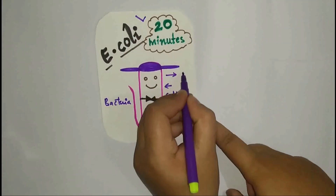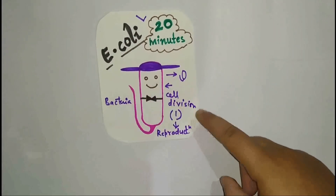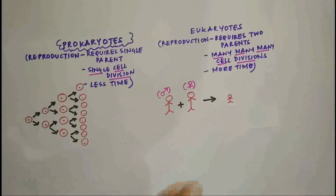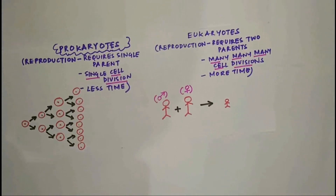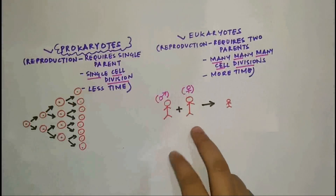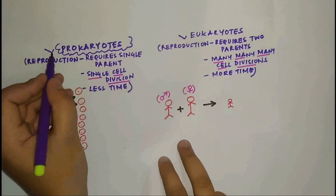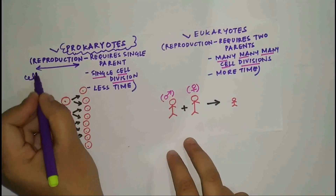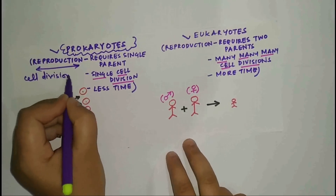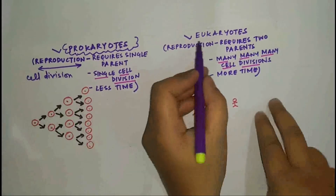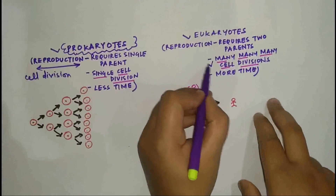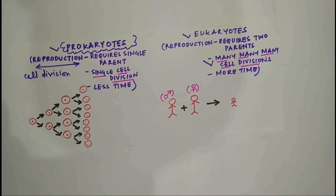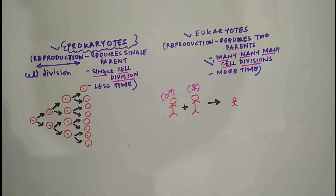As we said, cell division occurs in prokaryotes as well as in eukaryotes. One cell division in prokaryotes is equal to one reproduction. But in eukaryotes, reproduction requires many, many cell divisions.